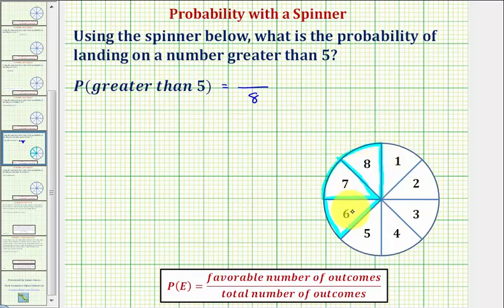So notice how there are three favorable outcomes, and therefore the probability of landing on a number greater than five is three-eighths.